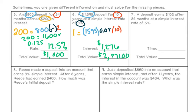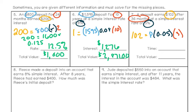Question 7 says a deposit earns $102 after 36 months at a simple interest rate of 5%. Looking at the problem, I don't know how much money was initially deposited — our principal. The interest is $102, the time is 36 months which is 3 years, and the interest rate is 5% or 0.05. Solving for the unknown P, the principal is $680. For the total value, I take the $680 initially deposited and add the $102 interest earned, to get a total value of $782.